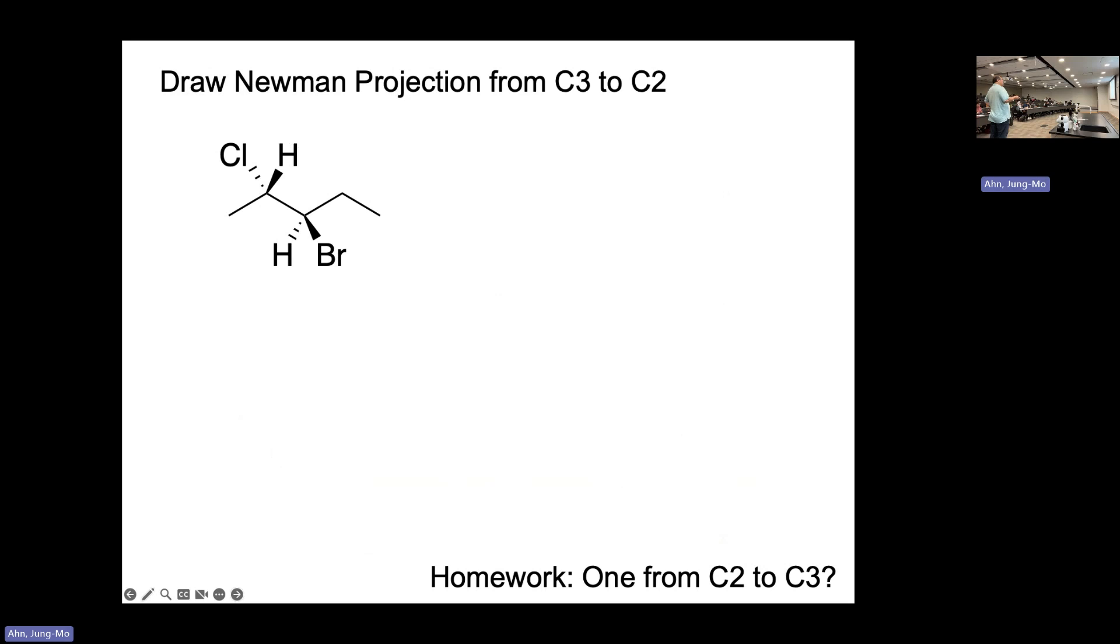To draw the Newman projection of this molecule from C3 to C2, that means carbon number three to carbon number two. That's carbon number three, that's carbon number two, and then you're going to look through the bond.